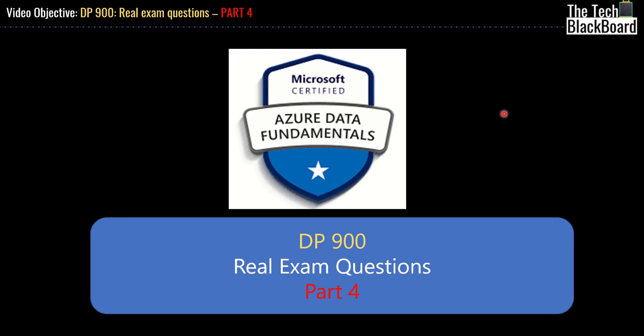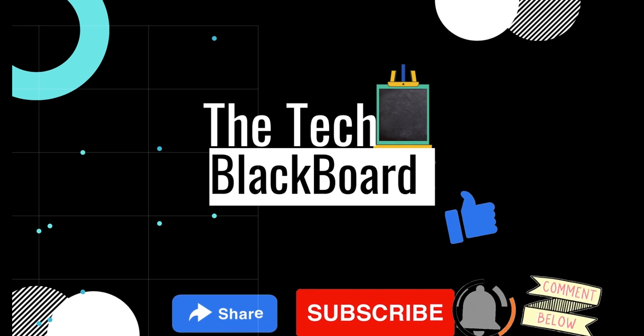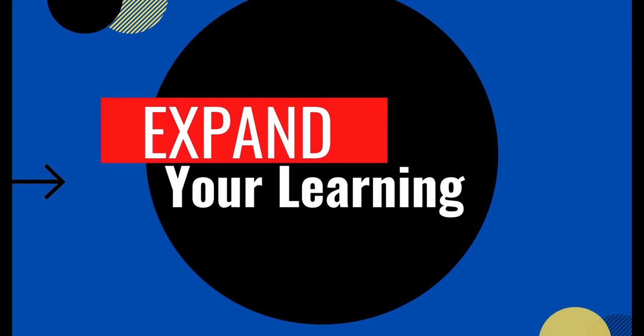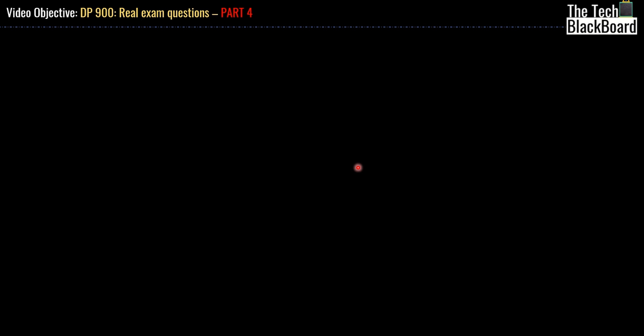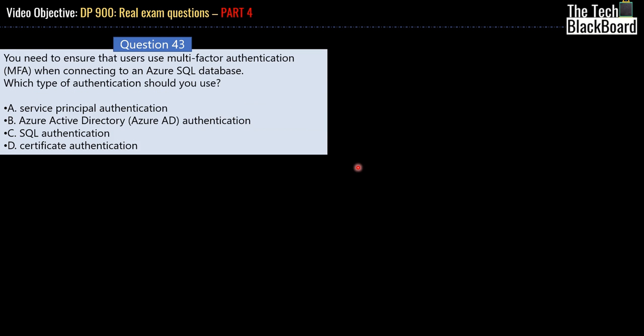Hello and welcome back to the Tech Blackboard. Today we start part 4 of our DP-900 real exam question series. If you wish to watch the earlier 3 parts, the link for the entire playlist is now available in the i button above and in the description box below. Until part 3, we have covered question number 42. Let's begin with question number 43.